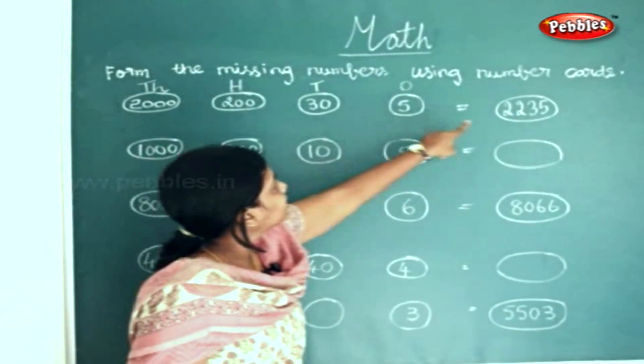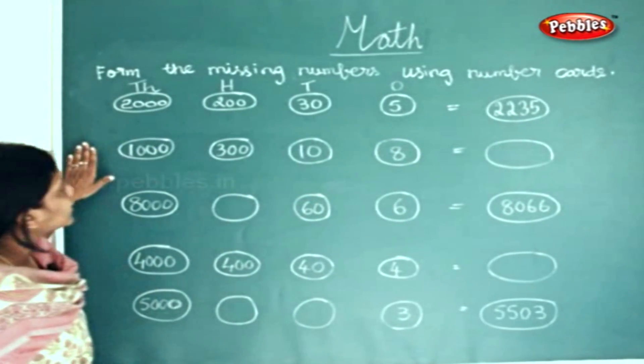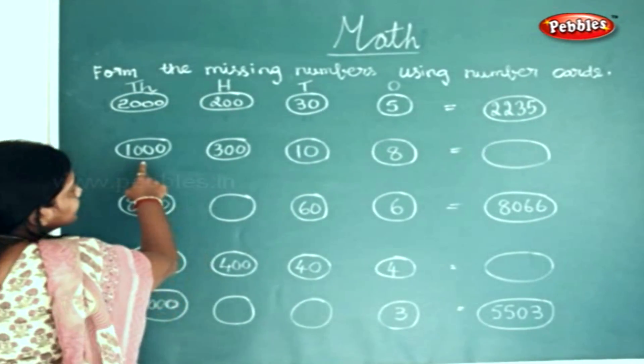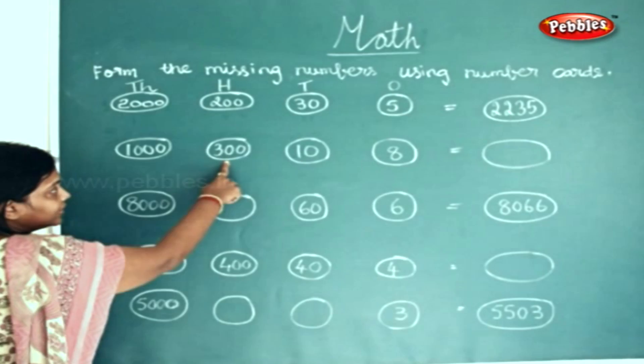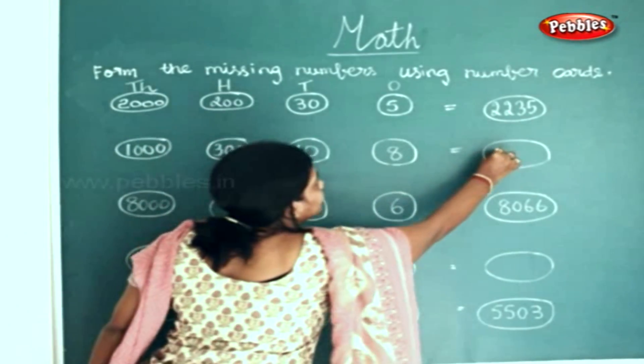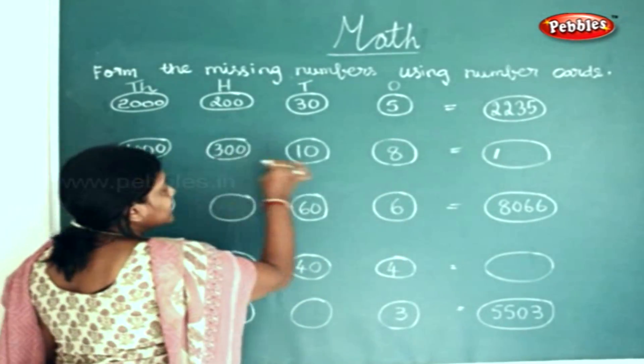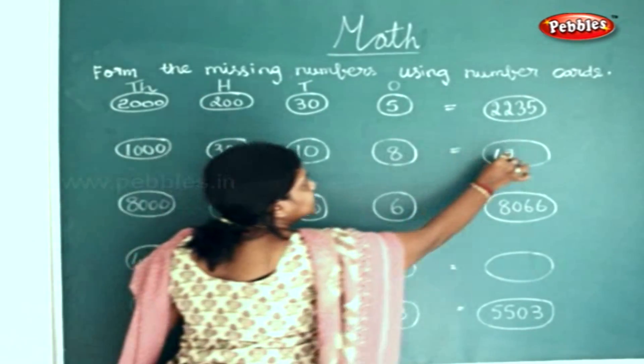And the ones place you can find 5. In the same way we will try doing this sum. So 1318: one thousand, three hundreds, and eighteen.